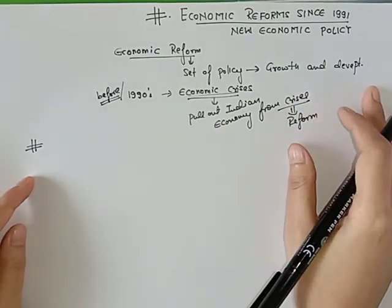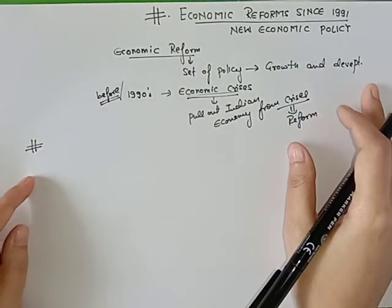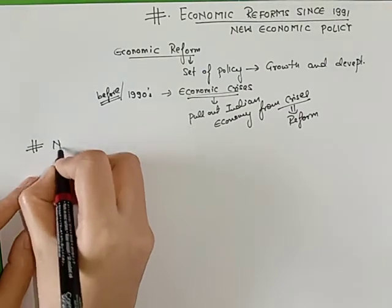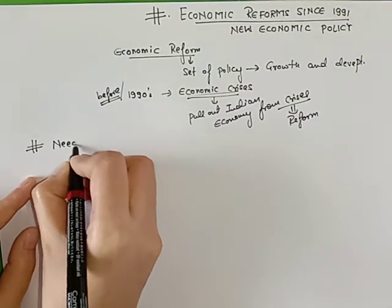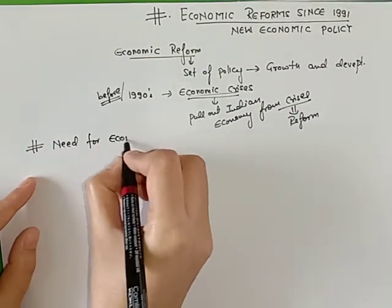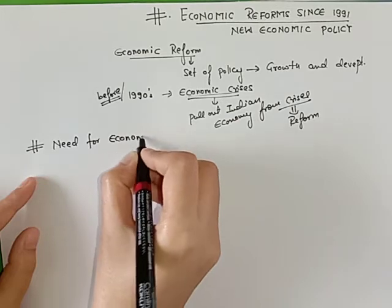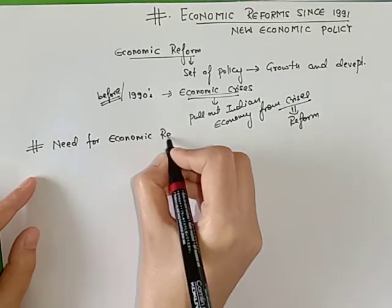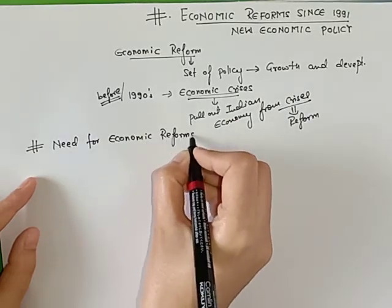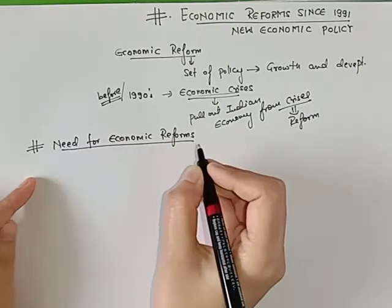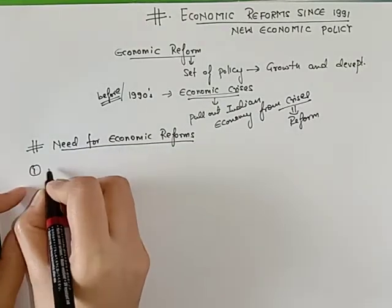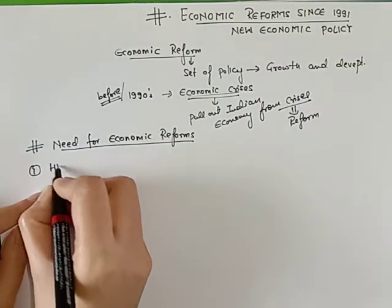From this chapter, the first topic is the need for economic reforms — that means, reforms ki zarath hi kyun padhi? Why did our economy need reforms? The first reason is high fiscal deficit.